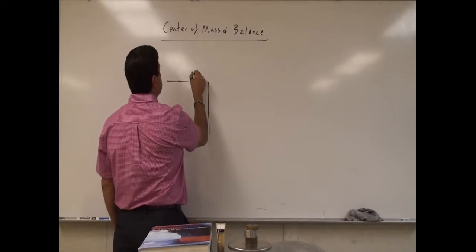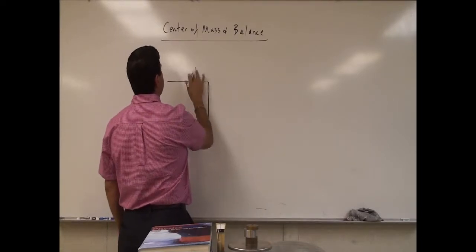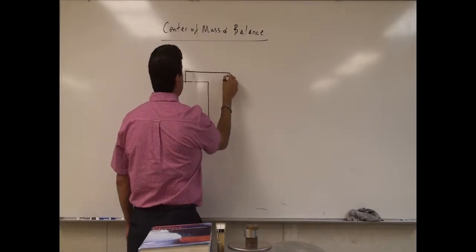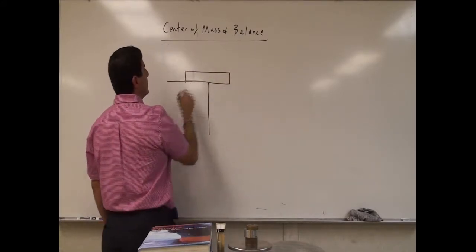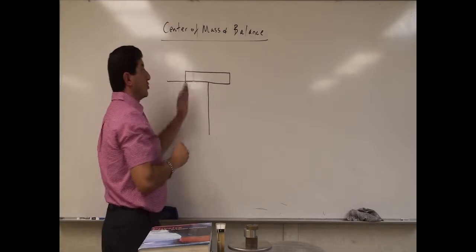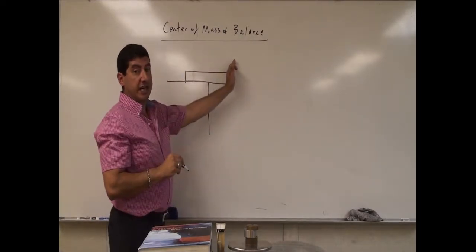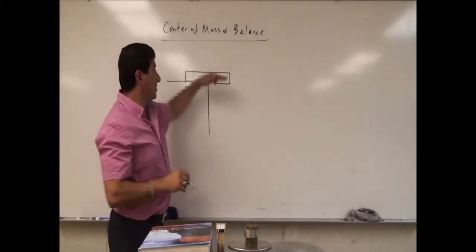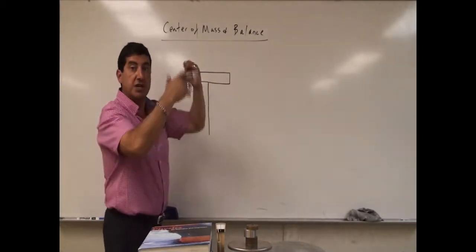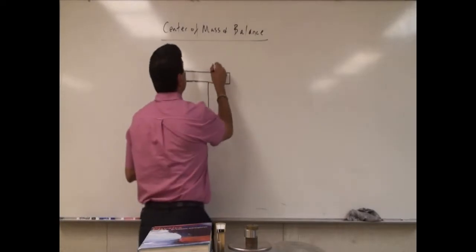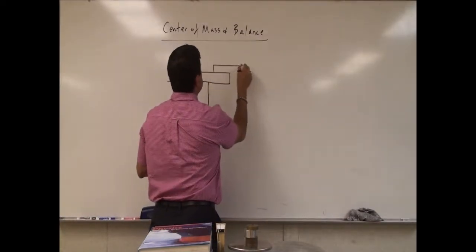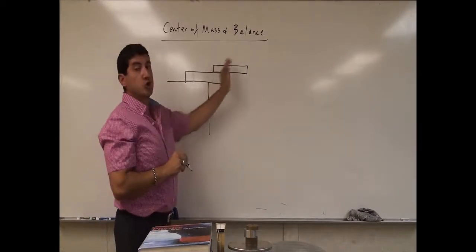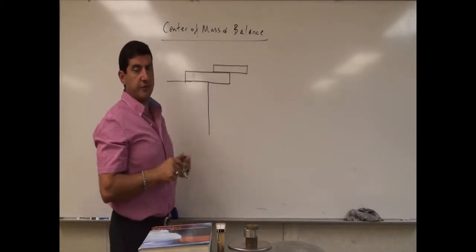I'll put one of the books something like this over the edge of a table — maybe less than half of it over the edge. Then I'll try to put another book as far out as I can and find out how far I have to go until the system of two books falls over. So how far can that book go out until this system falls over?